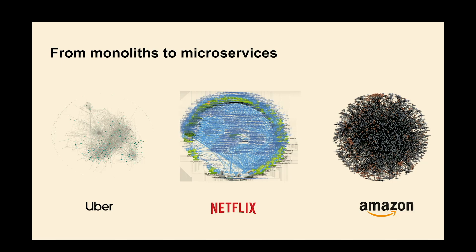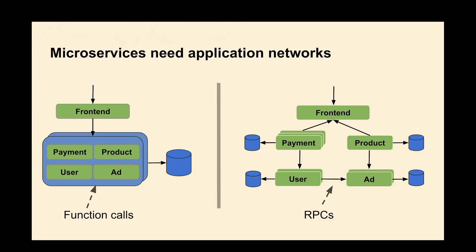These application maps show each dot as a microservice and the arrows show which service is talking to which service, giving a communication graph that is very rich and very dense. As we transition from the old world to the new one, everything that was a simple function call becomes an RPC going over the network, which is why 95% of traffic in general-purpose data centers belongs to RPCs going across applications.